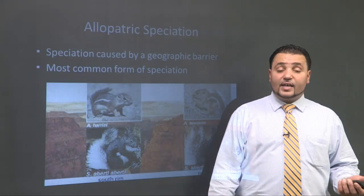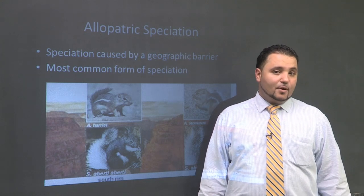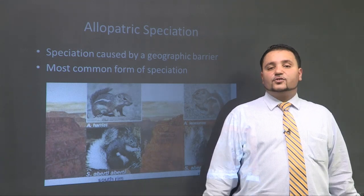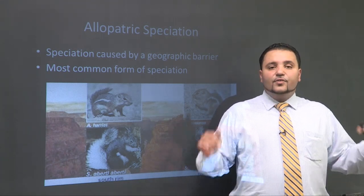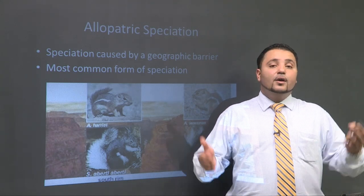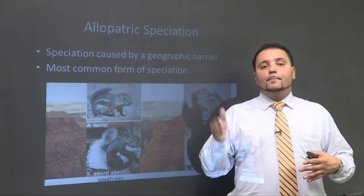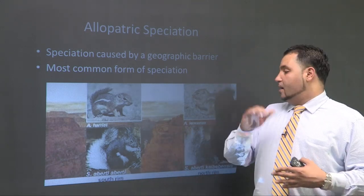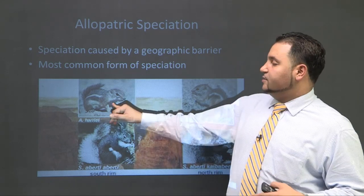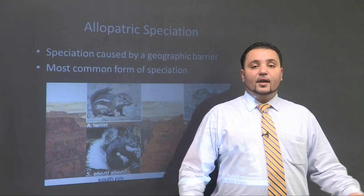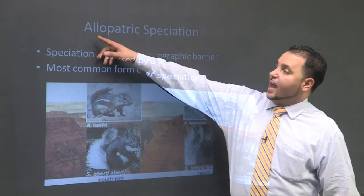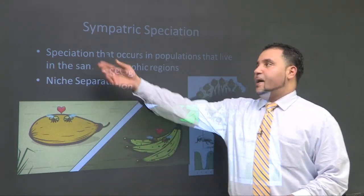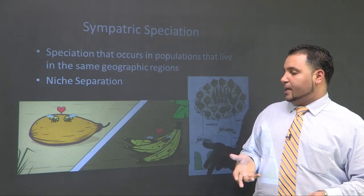Allopatric speciation: here I have two species of chipmunk separated by a geographic barrier — the Grand Canyon. These two chipmunks were probably at one time one species, all sharing the same land. But erosion created this big valley, and now these two individuals never meet. They have a geographic barrier in front of them, hence a new species emerges. Allopatric means 'other country.' Sympatric means 'same country,' so what could possibly happen there?